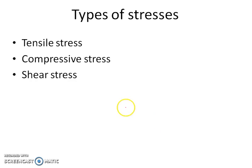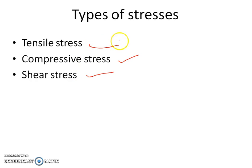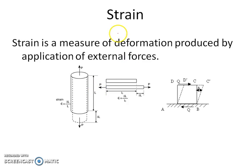Therefore there are three types of stresses: tensile stress, compressive stress, and shear stress. Tensile stress is due to tensile force, compressive stress is due to compressive force, and shear stress is developed due to shear force. The tensile stress and compressive stress are together called direct stresses, whereas shear stress is called tangential stress.